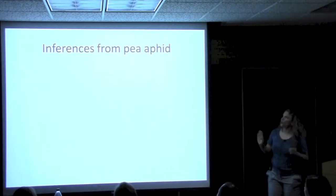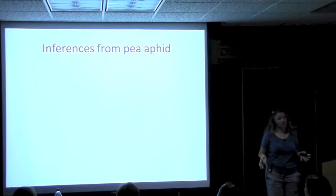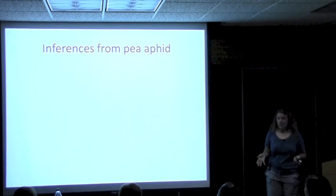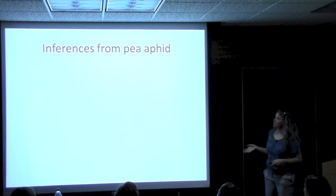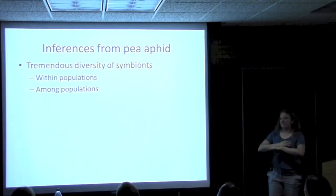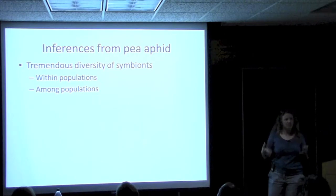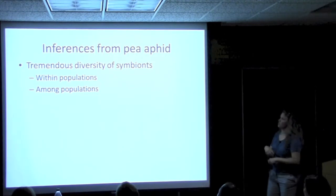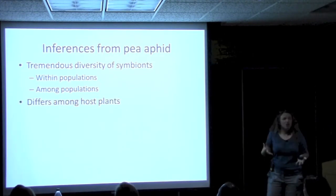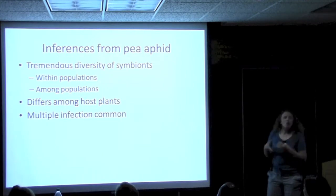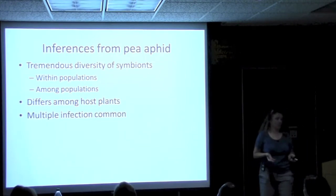So if our worldview of how symbionts are distributed on aphids is driven by pea aphid data, we would conclude: aphids have a tremendous diversity of symbionts; this varies within populations, among populations, differs among host plants, and multiple infections can be common — although not always.